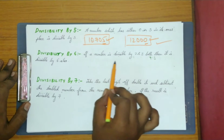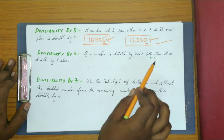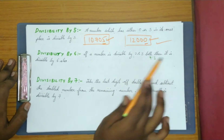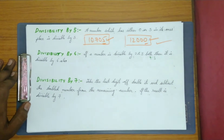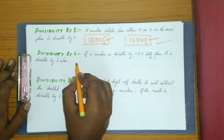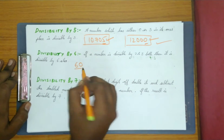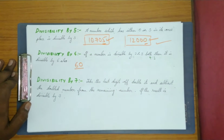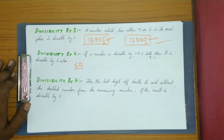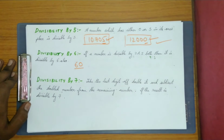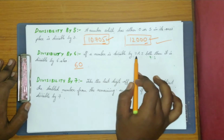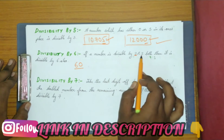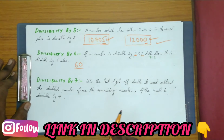If a number is divisible by both 2 and 3, then it is also divisible by 6. For example, take the number 60. To check whether it is divisible by 6, you need to first check whether the number is divisible by both 2 and 3.